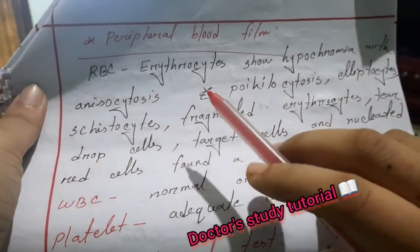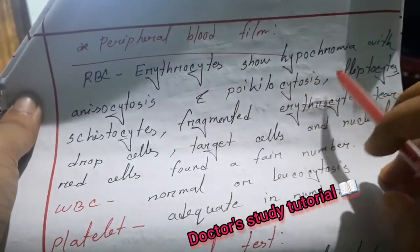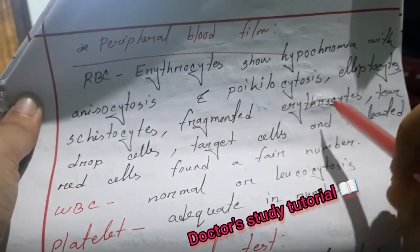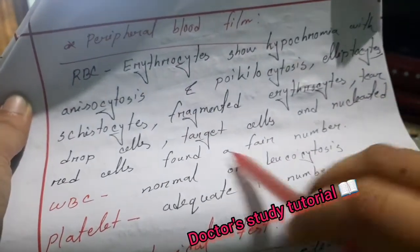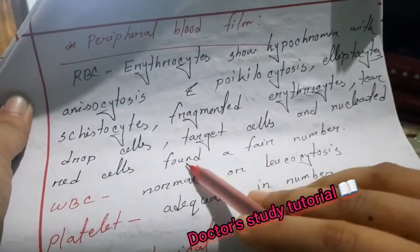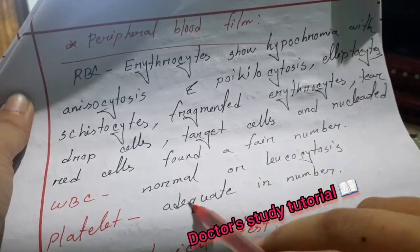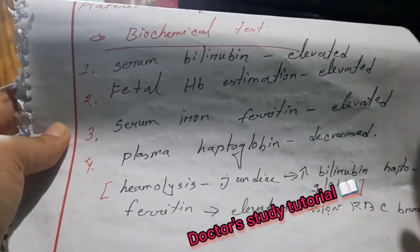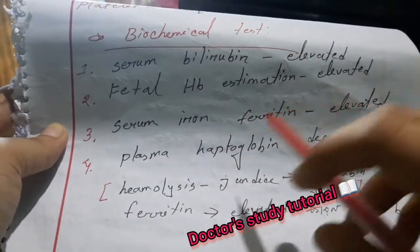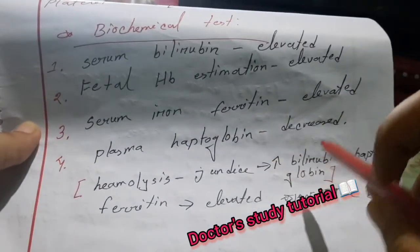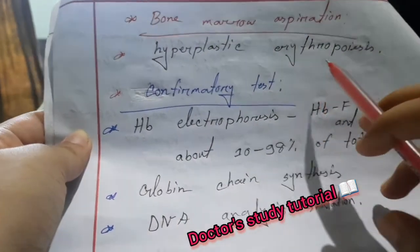On peripheral blood film: RBC series shows hypochromic erythrocytes with anisocytosis and poikilocytosis, including elliptocytes, schistocytes, fragmented erythrocytes, teardrop cells, target cells, and nucleated red cells in fair numbers. WBC shows normal count or leukocytosis. Platelets are adequate in number. Biochemical tests show elevated serum bilirubin, elevated fetal hemoglobin, elevated serum iron and ferritin, and decreased plasma haptoglobin. Bone marrow aspiration reveals hyperplastic erythropoiesis.